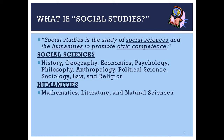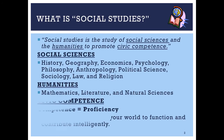We also have the humanities. Humanities would be math, literature, and natural sciences — basically your core classes. Every single year you're in middle school and pretty much every year in high school, you will always have a math class, a reading class, and a science class. Those are what we call the core of our curriculum, and that's why we spend so much time learning about those subjects.